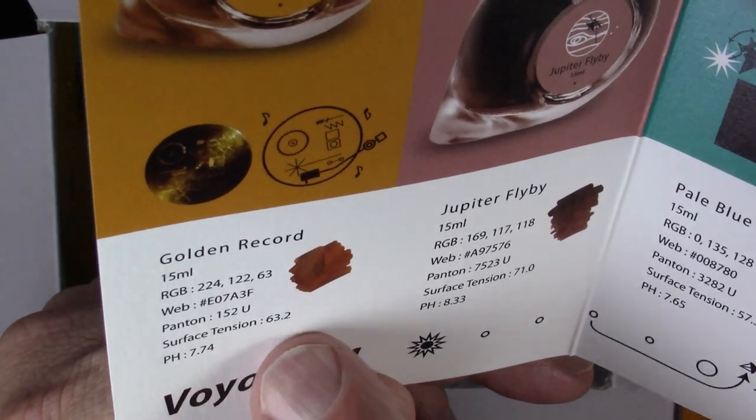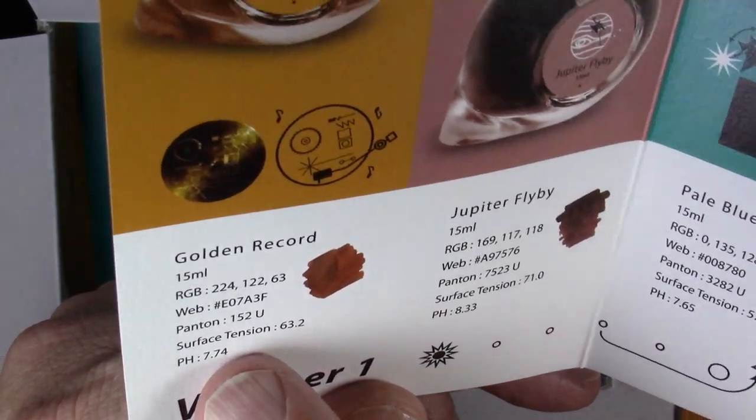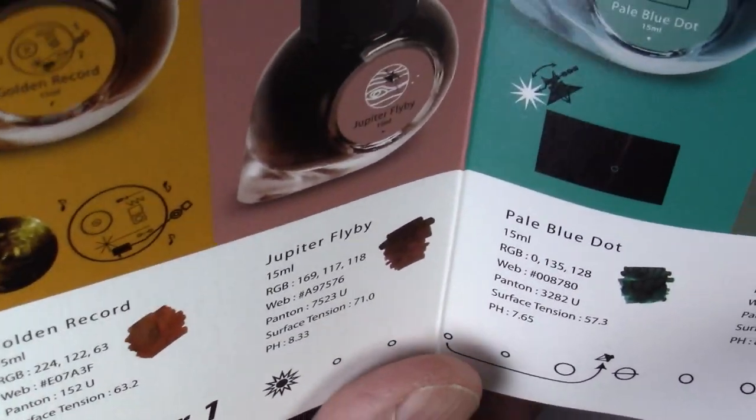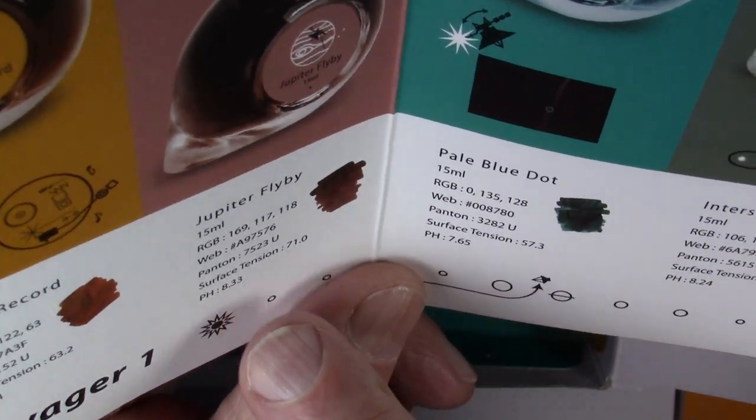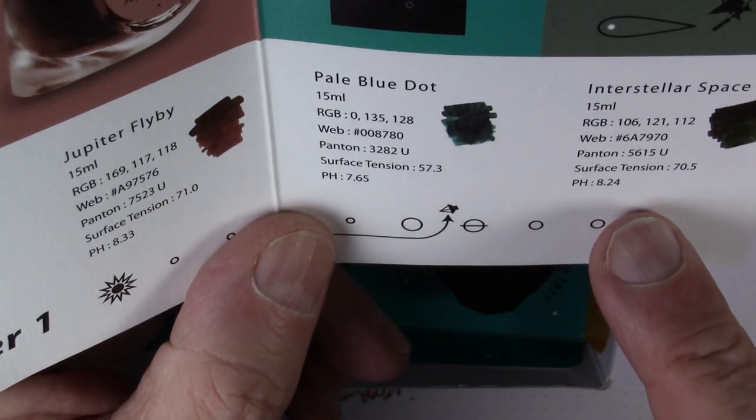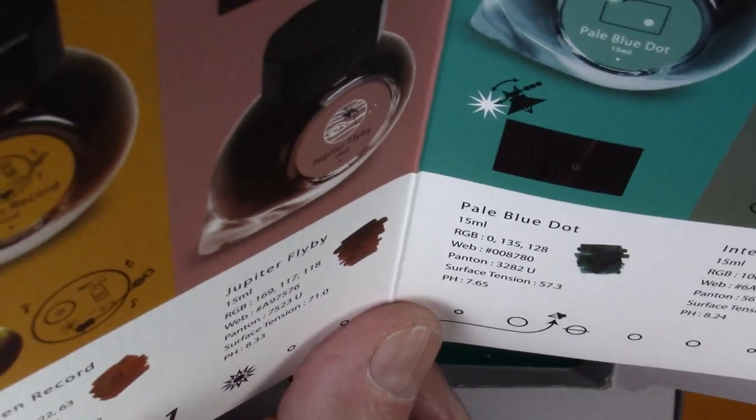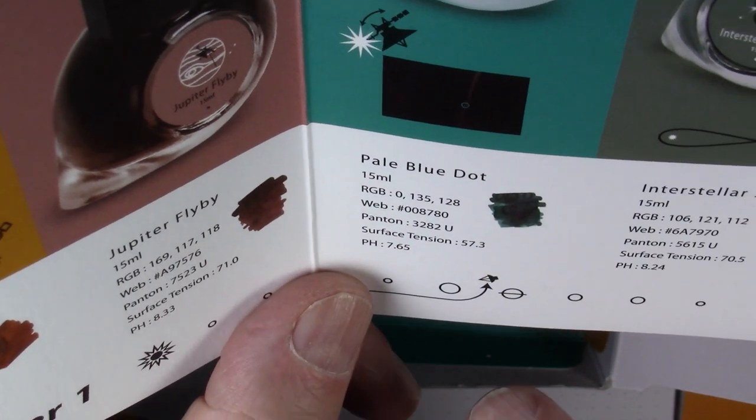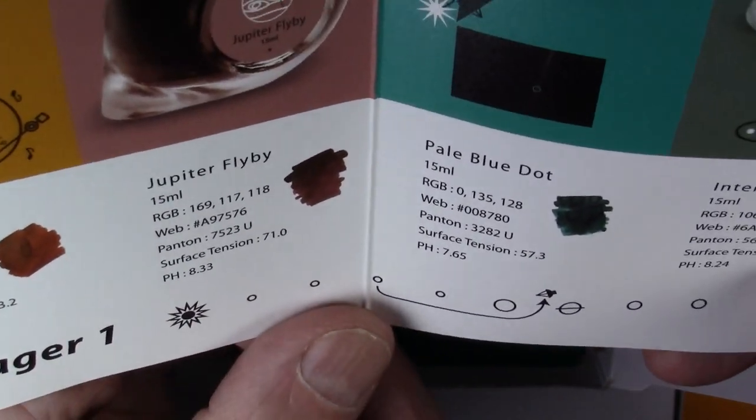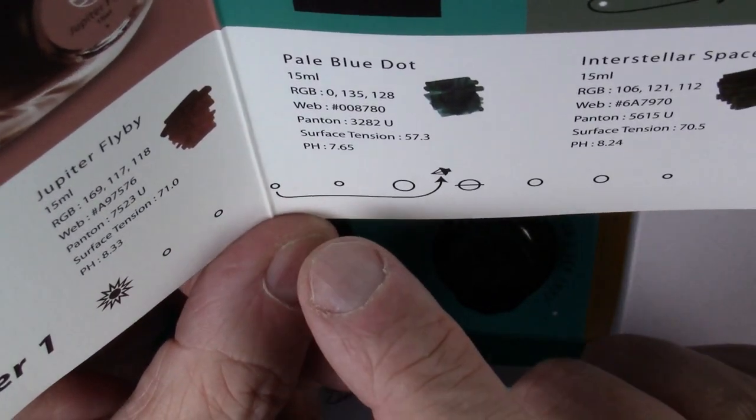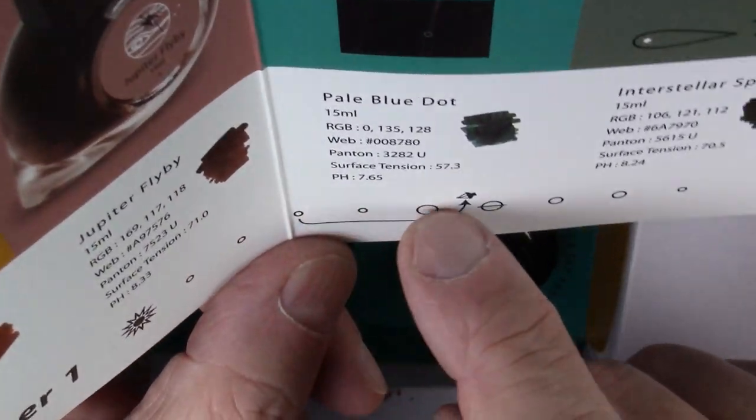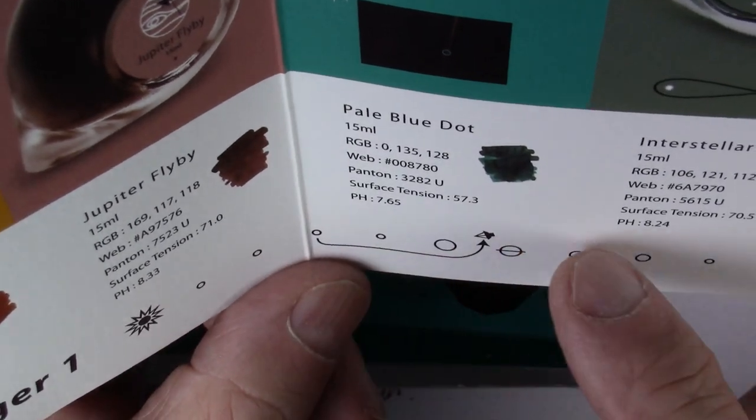So as you can see, this is slightly alkaline, this is even more alkaline, slightly alkaline, and more alkaline still. So these are all pHs above 7, which means they are alkaline inks.